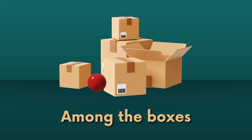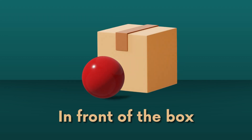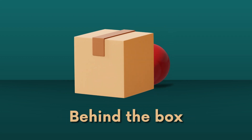The preposition 'among' signifies that an object is positioned in the midst of a group or surrounded by other objects. For example, 'the ball is among the boxes' means that the ball is placed along with other boxes. The preposition 'in front of' describes an object's placement directly ahead or facing another object. For example, 'the ball is in front of the box' means that the ball is ahead or facing the box. The preposition 'behind' indicates that an object is situated at the rear or back side of another object. For example, 'the ball is behind the box' means that the ball is located at the back side of the box.